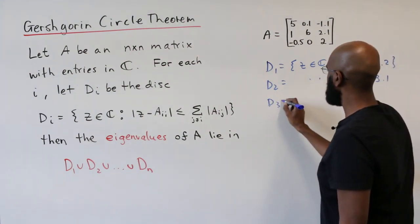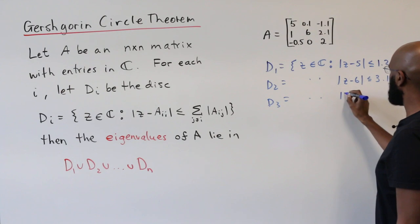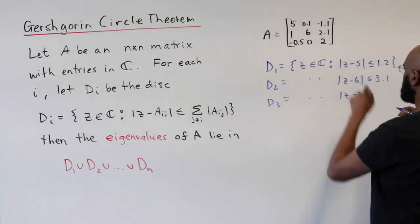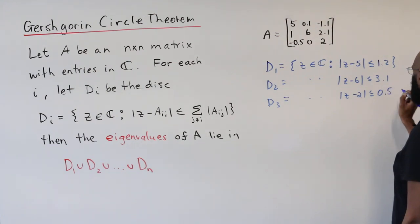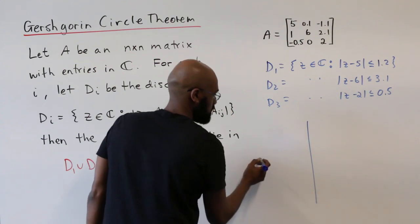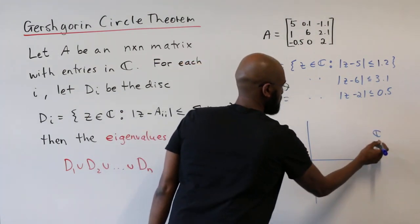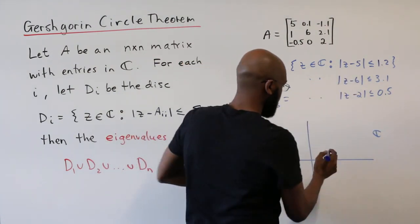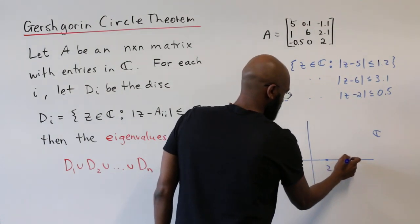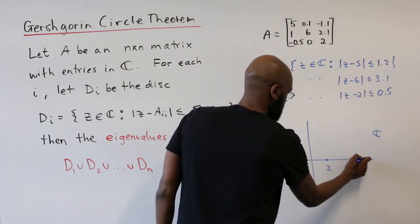And then for D3, we'll have the points in the complex plane where Z minus 2 is less than or equal to the sum of the absolute values of these two, which is 0.5. So what this says then, is that if we draw the complex plane, we look at these points, 5, 6, and 2, 2 is maybe somewhere over here, 5 over here, and then 6 over here.